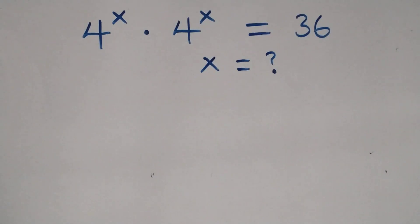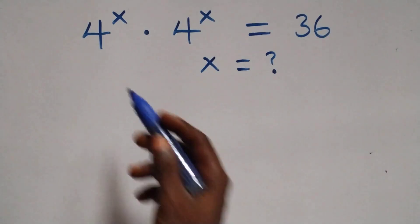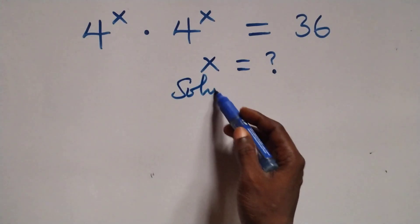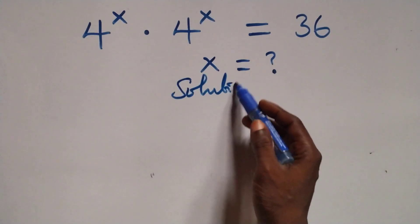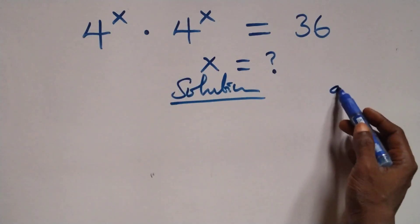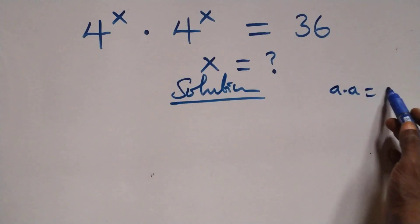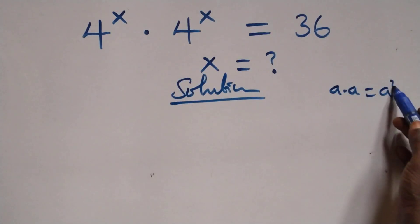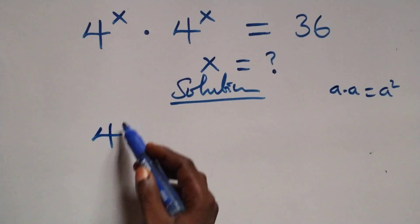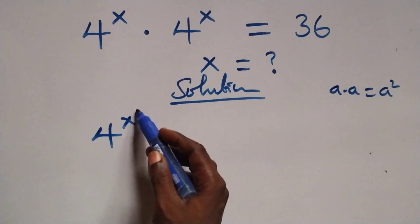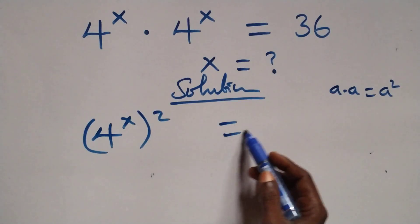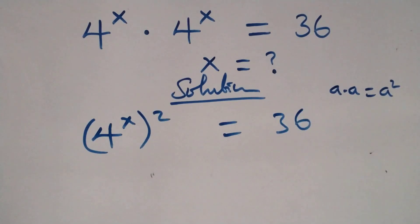Hello, you're welcome. We will solve this nice exponential equation. What we have here: when we have a times a, this can be written as a squared. The same thing here — multiplying and writing as 4 raised to power x, all squared, equals 36.